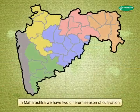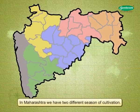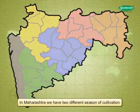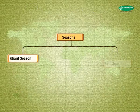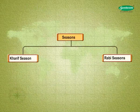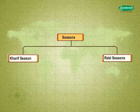In Maharashtra, we have two different seasons of cultivation: the Kharif and the Rabi seasons. Let us learn more about these seasons.